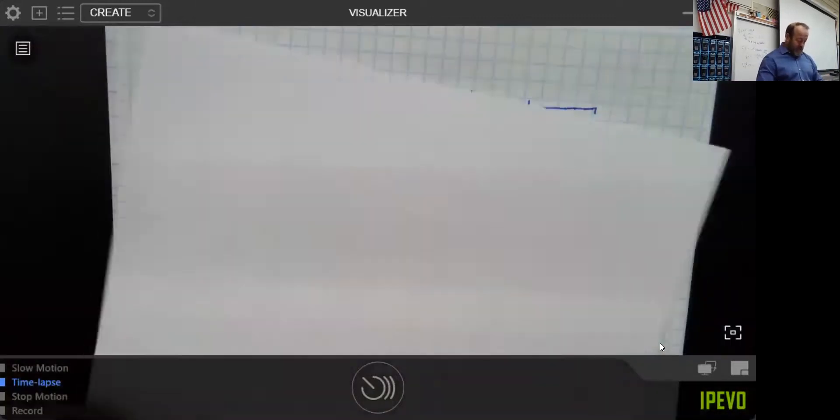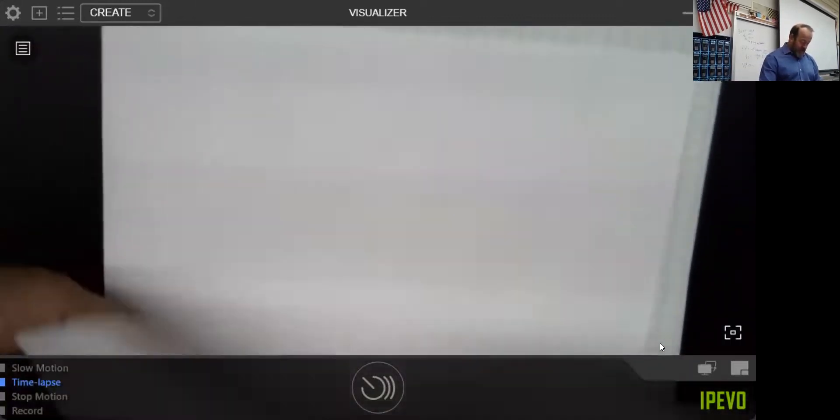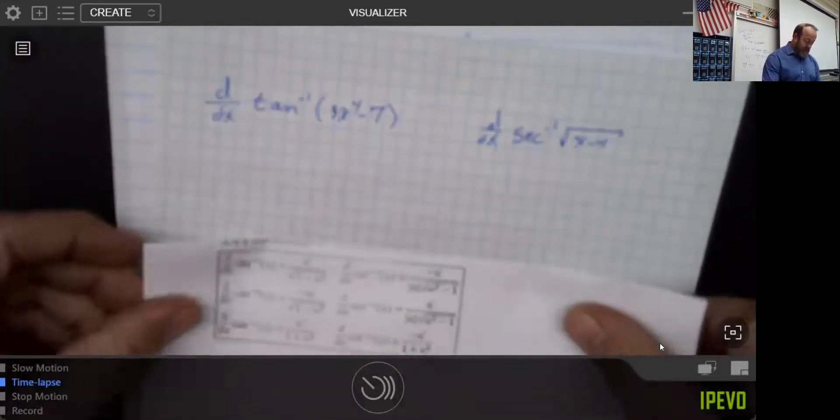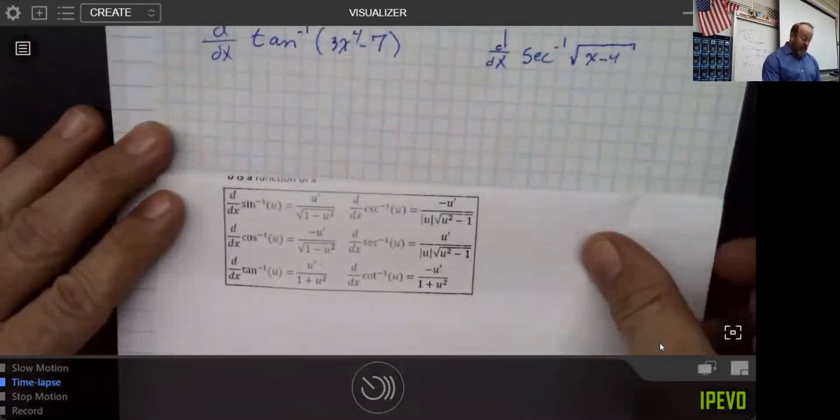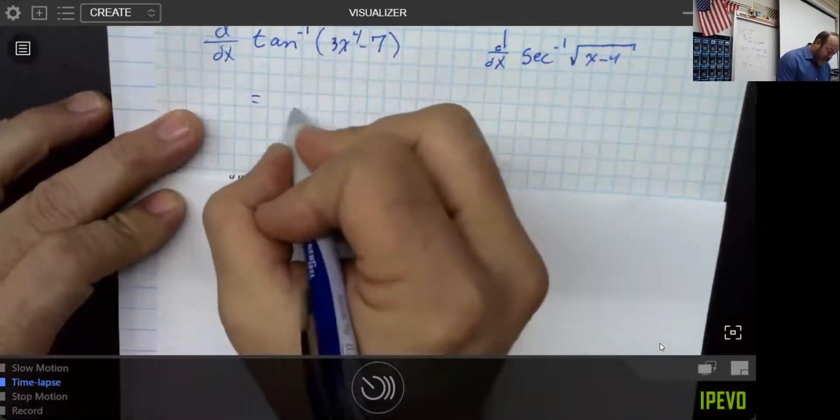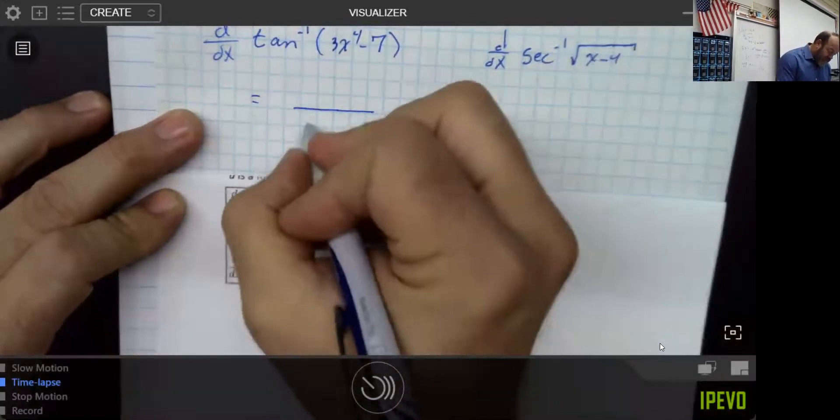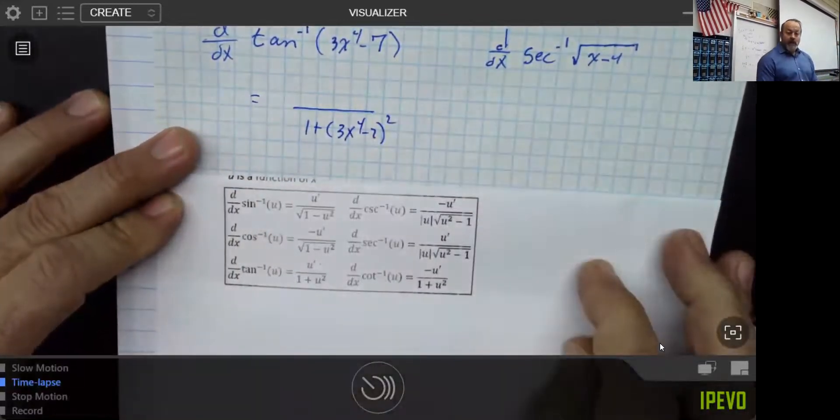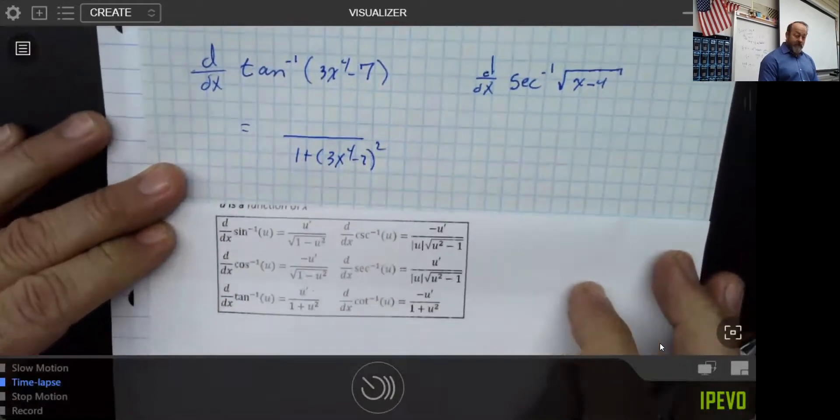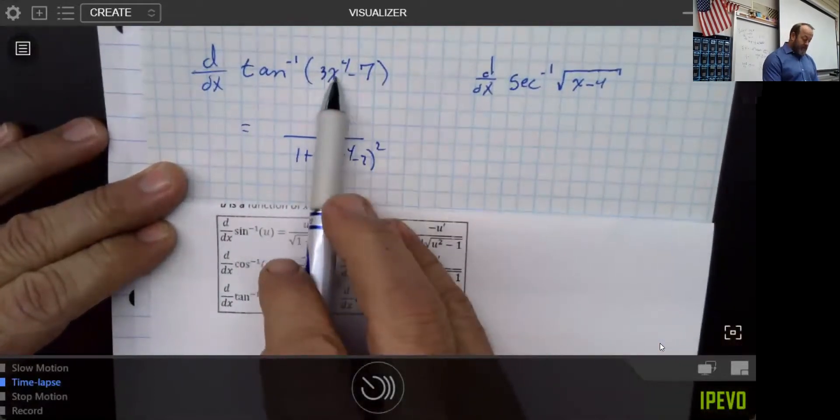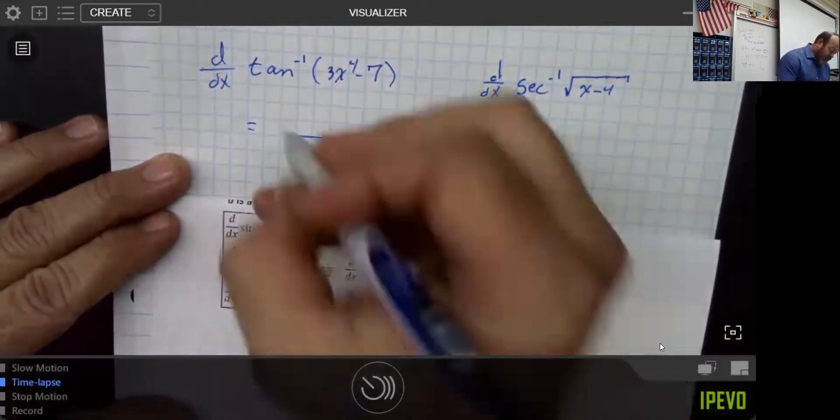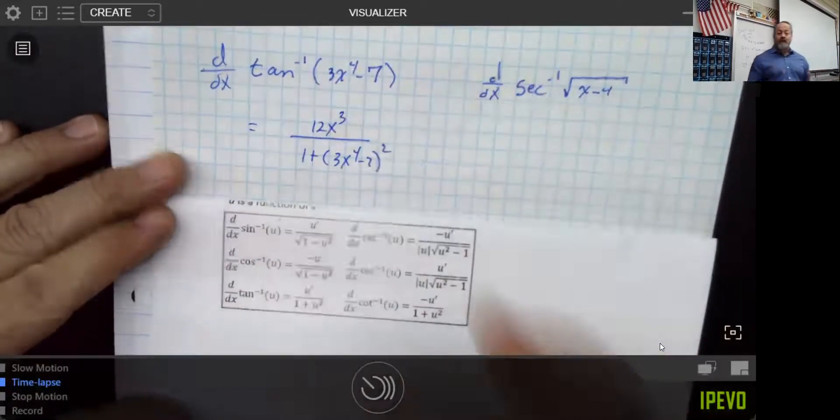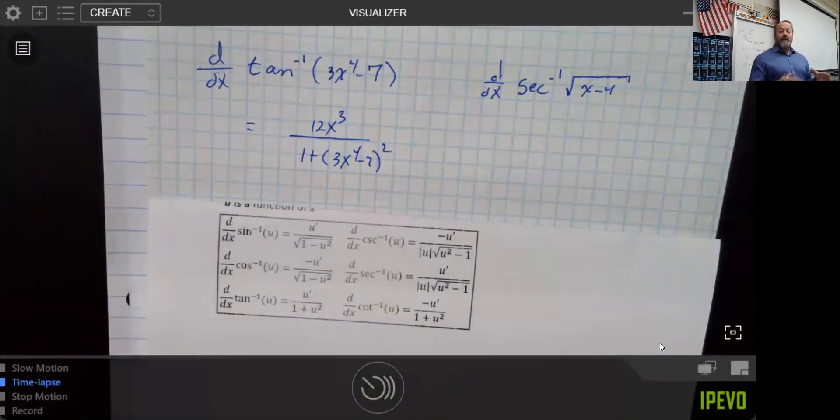So, you can see that this would actually be substantially faster if instead of building those things every single time, we just had them memorized. So, the derivative of this is 1 plus whatever u is squared times the derivative of whatever that inside piece is. And the derivative of that inside piece would be 12x cubed. And notice that that was a much faster process.